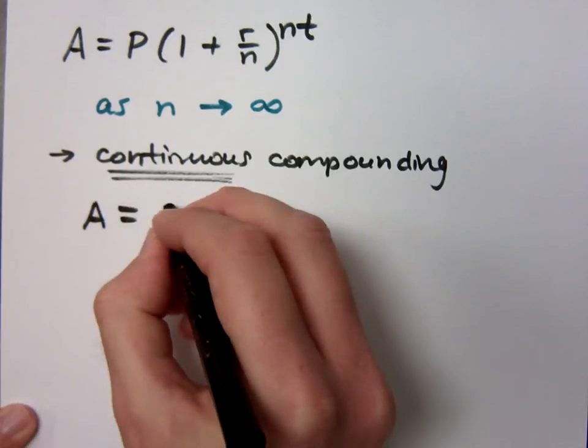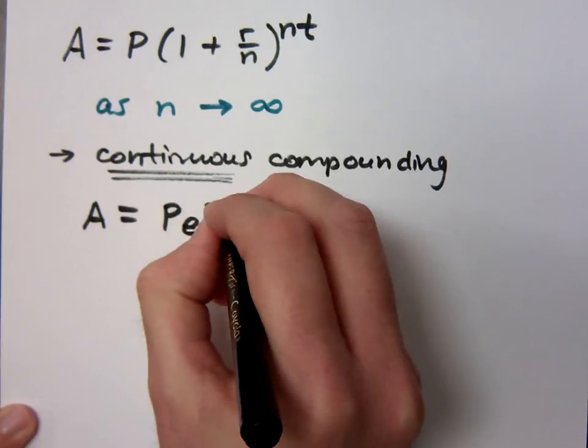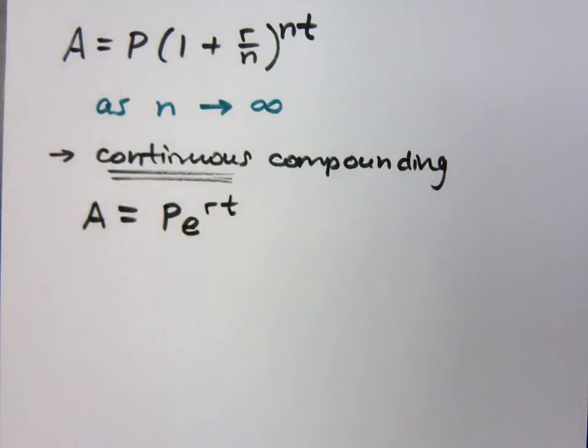The amount of money you have is your principal times E to the RT. You're probably going, what in the world is E? E is a constant. It's a super important, irrational constant for us. I thought it was like shampoo, Pert. Yeah, my pre-calc teacher made us call it the Pert equation. Oh, the Pert equation. I don't realize they still made Pert. I don't know either. I think they do.